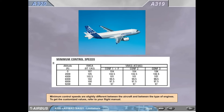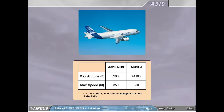Minimum control speeds are slightly different between the aircraft and between the type of engines. To get the customized values, refer to your flight manual.